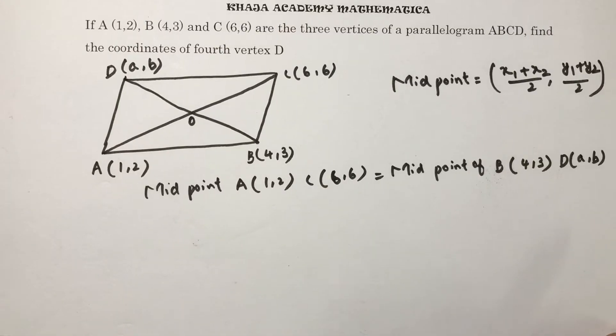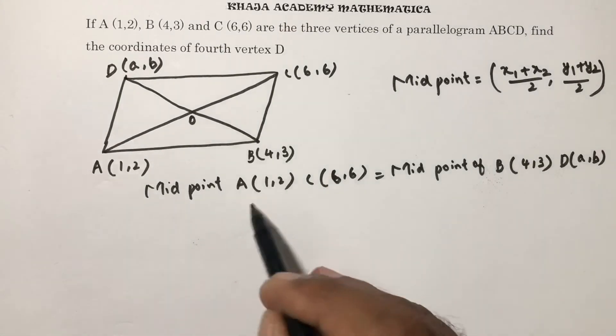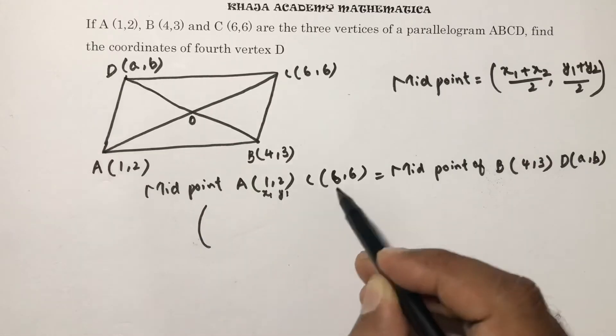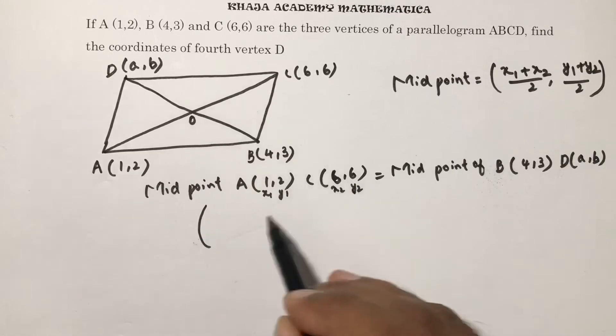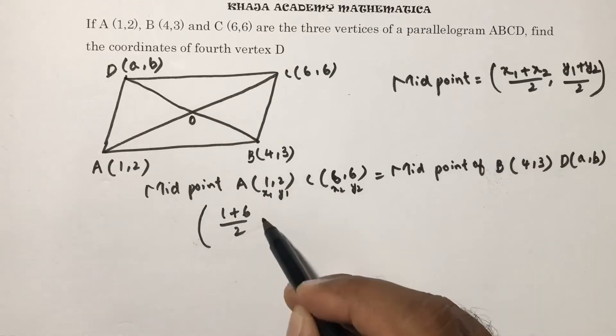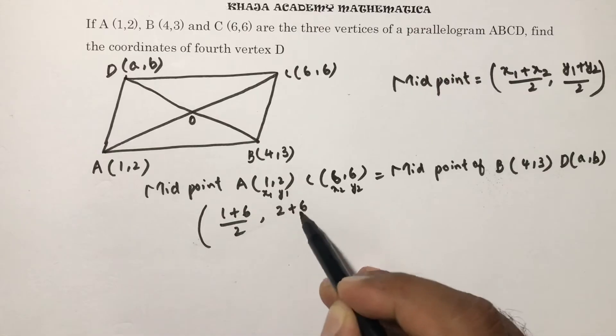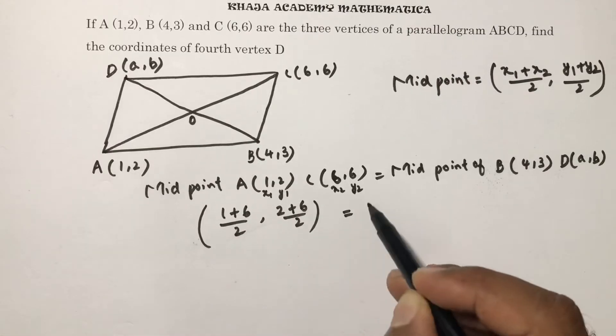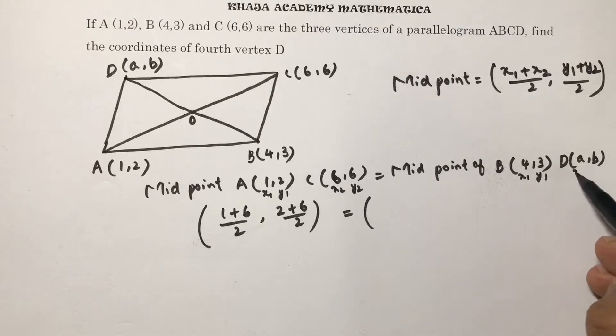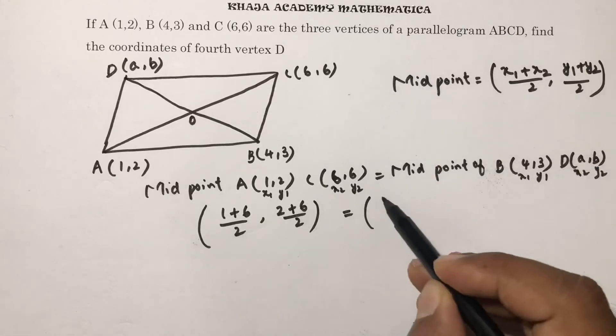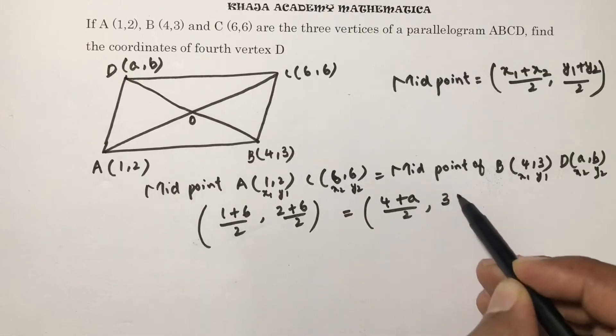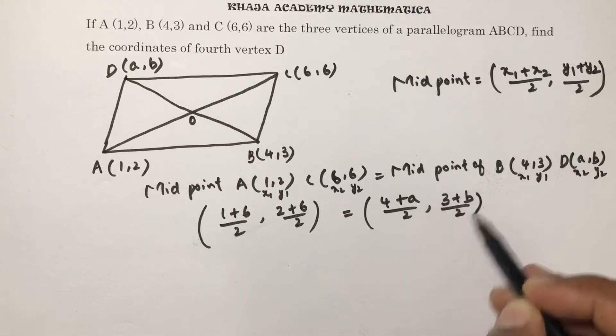Now to find A and B, so midpoint if you calculate for this. x1, y1, x2, y2. So 1 plus 6 by 2, x1 plus x2 by 2, y1 plus y2 by 2. Here x1, y1, x2, y2, 4 plus A by 2, 3 plus B by 2.